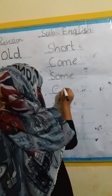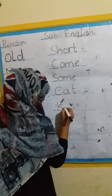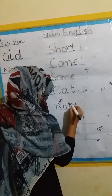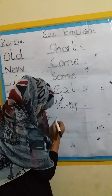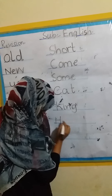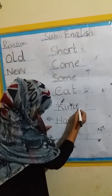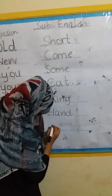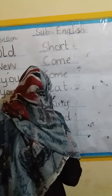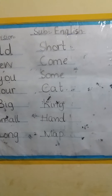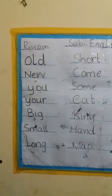And the vocabulary words: C, A, T — cat. K, I, N, G — king. And after king and hand. Hand. After hand: M, A, P — map. Ma and map. Now we will revise all the concepts, tricky words and vocabulary words.